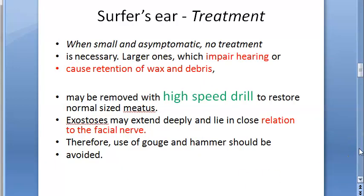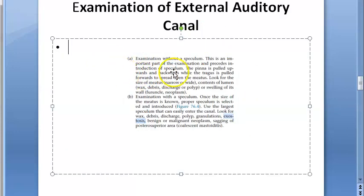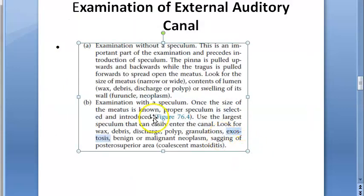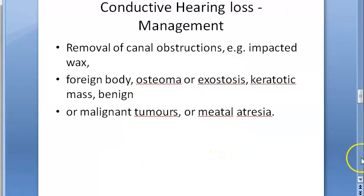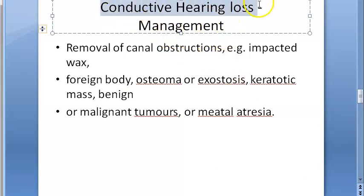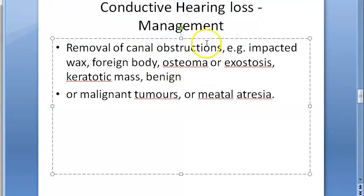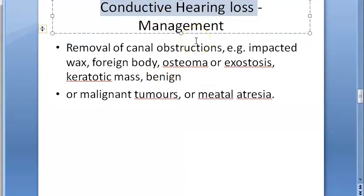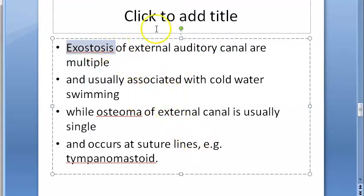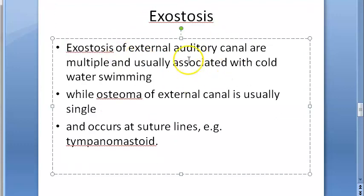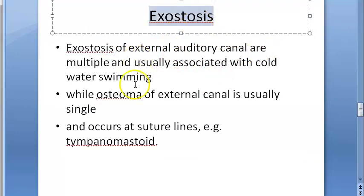Treatment is surgery with a high speed drill. When examining the external auditory canal, you cannot just see it directly - you need a speculum. With a speculum you will be able to see the exostosis. This condition causes conductive hearing loss because there is no proper conduction of the sound wave via air to the tympanic membrane. Management includes removal of the exostosis.